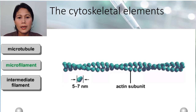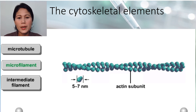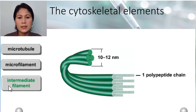Each microfilament is composed of two helically twisted polypeptide chains. The chains are assembled from actin monomers. Like microtubules, microfilaments can be assembled and disassembled.